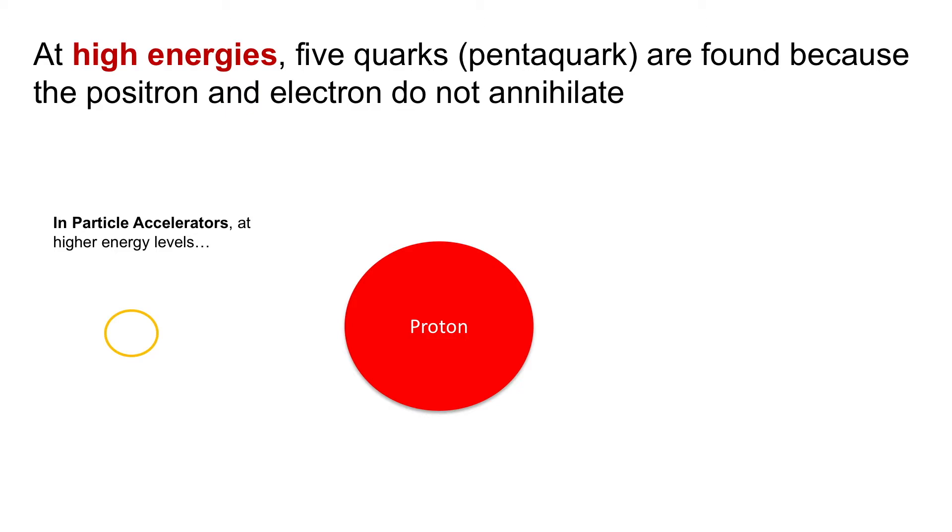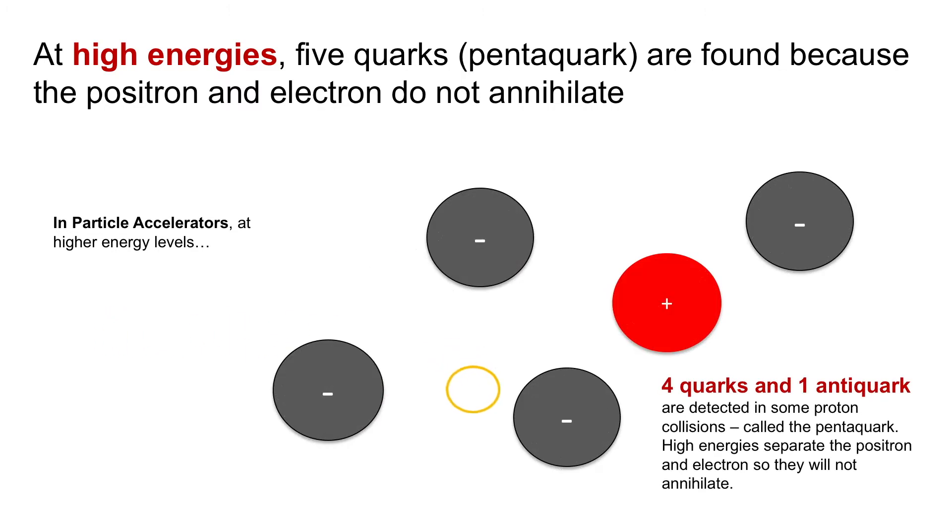But three quarks would be detected, and these would be high-energy electrons that would appear like quarks. Now, finally, at higher energies, five quarks are found. And the reason is because at these high energies now, the remaining positron and electron would not annihilate.